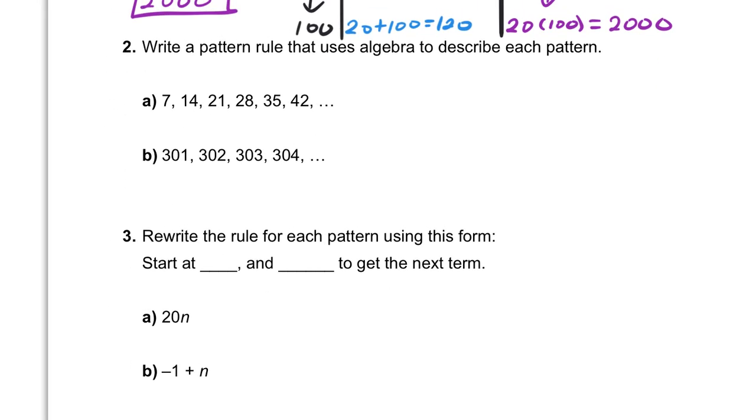Next, it says write a pattern rule that uses algebra to describe each pattern. This is a little bit different than the pattern rules that we're used to making. The pattern rules that we were used to making for A would be like start at 7 and add 7 each time to get to the next term. I hope you can see that we are just adding 7 all the way down the line. But to use algebra, it's a little bit different. Let's make another table of values.